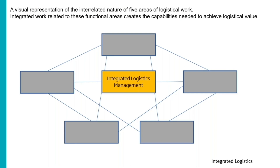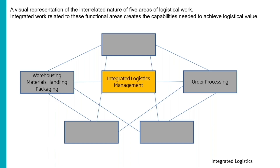There are five areas of logistics work. The integrated work related to these functional areas creates the capabilities needed to achieve logistical value. Dealing first with order processing: the importance of accurate information to achieve superior logistic performance has historically been underappreciated — good information is absolutely fundamental. The benefits of fast information exchange are directly related to work balance, with the key objective being to balance key components of the logistics system. Warehousing management stores products at and between the point of origin and point of consumption, including inbound receiving, outbound picking and dispatching stock, and warehousing management can assist to identify, measure, and improve performance.